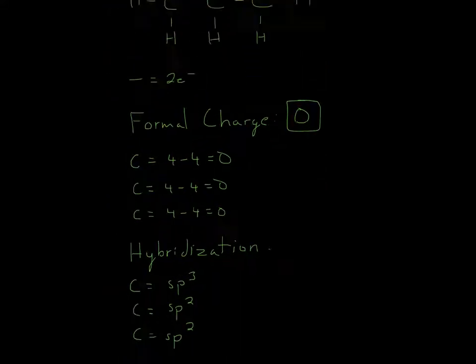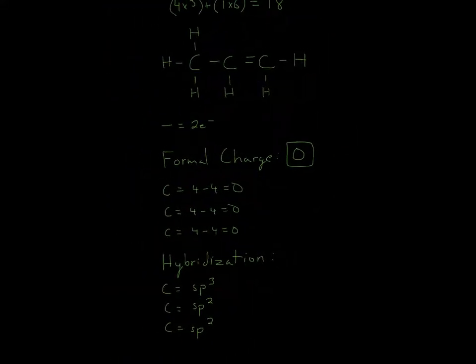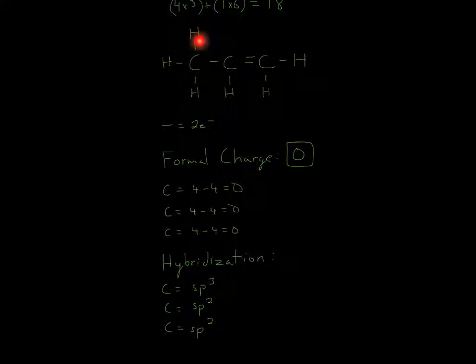Now for hybridization, for each one of these, at least one of them is different than the others. For hybridization, what you do is count the dashes: 1, 2, 3, 4. Now you add the exponents until you get the number you got here. Remember that there's always a hidden 1 — S to the 1 — so S to the 1, and 1 plus 3 is 4, and that equals 1, 2, 3, 4 domains.